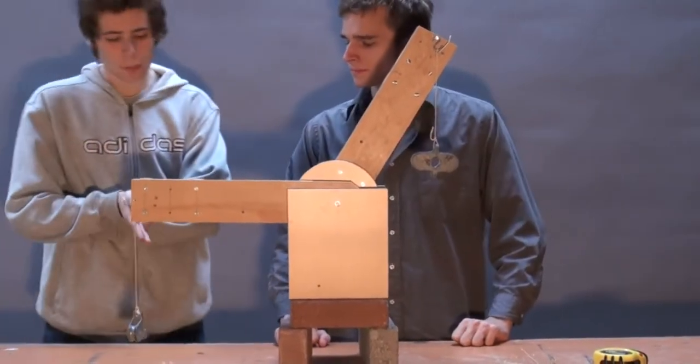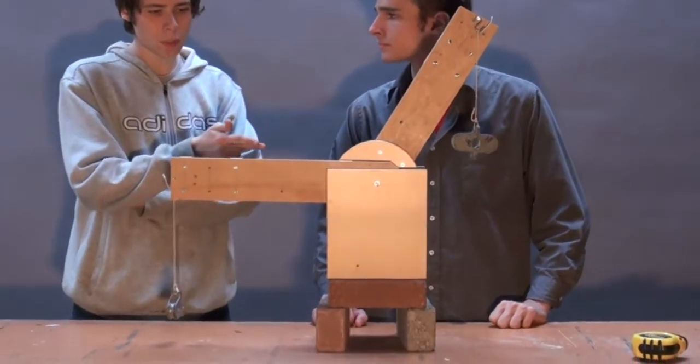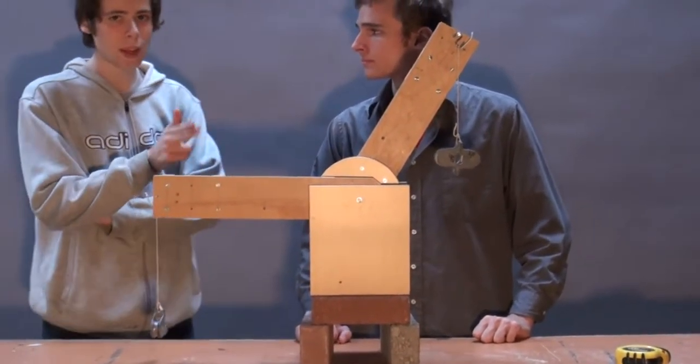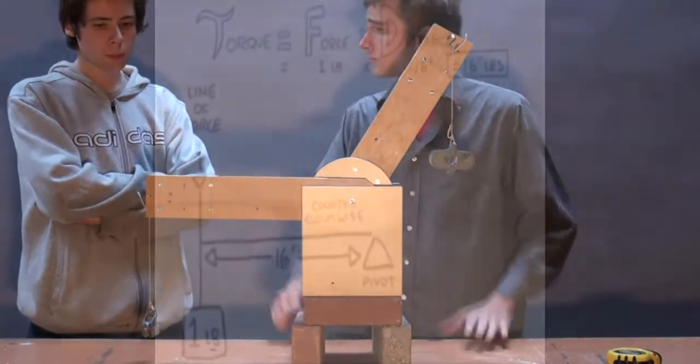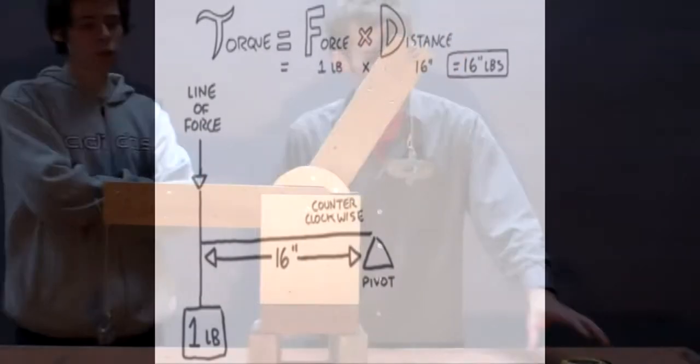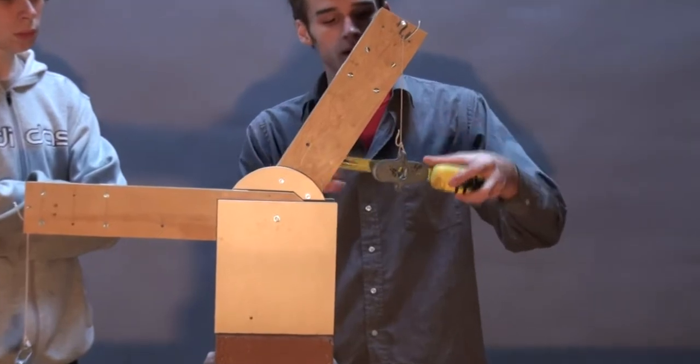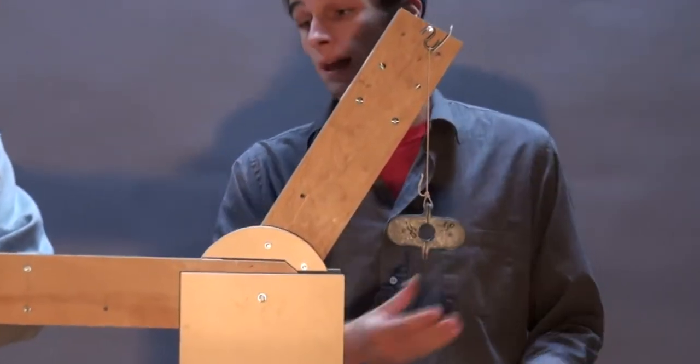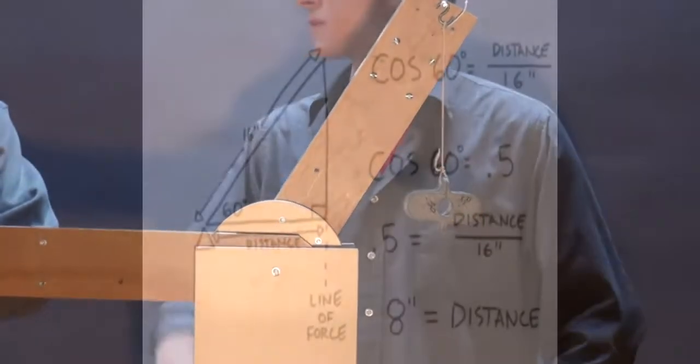Because we have 1 pound at 16 inches from the pivot, that's 16 inch pounds. What's an inch pound? Pounds times inches. So if this is 8 inches away, and this is only 2 pounds, 8 times 2 would equal 16 inch pounds. Exactly.